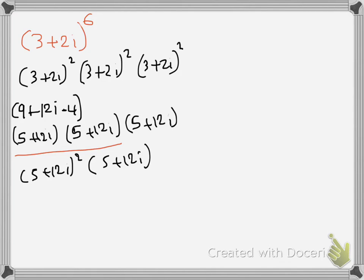Now I expand this bracket here which will give me square the first one, which is 25, two times 12 times 5, and that gives me 120i, and then 12 square is 144, and because it is i squared, minus 144.